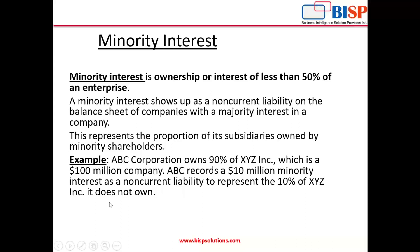This $10 million is recorded as a non-current liability to represent the 10% of XYZ Incorporation that ABC does not own. ABC Corporation has invested 90% in XYZ Corporation, meaning 10% belongs to minority shareholders. So 10% of $100 million is the $10 million minority interest — also called non-controlling interest — shown under non-current liability. The remaining 90% is shown in the investment, and 10% is recorded as a non-current liability.